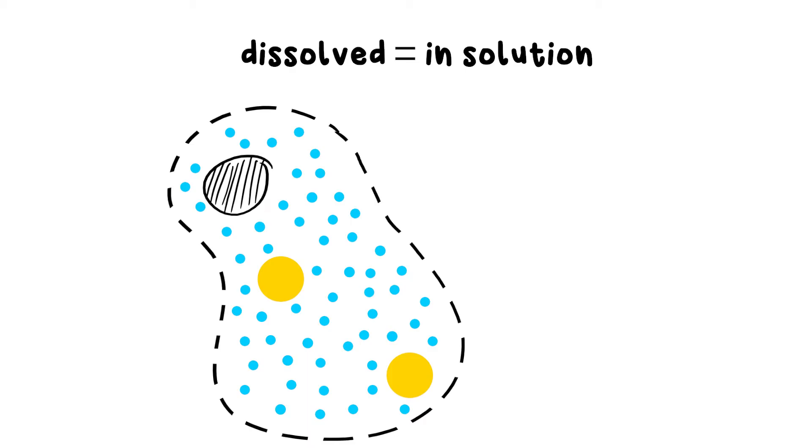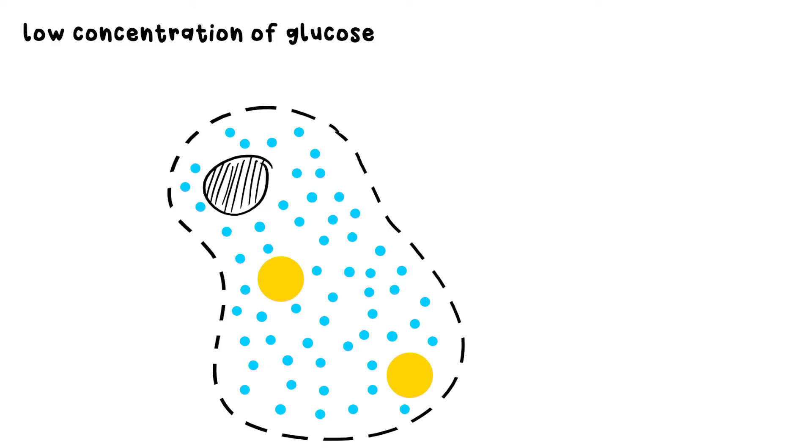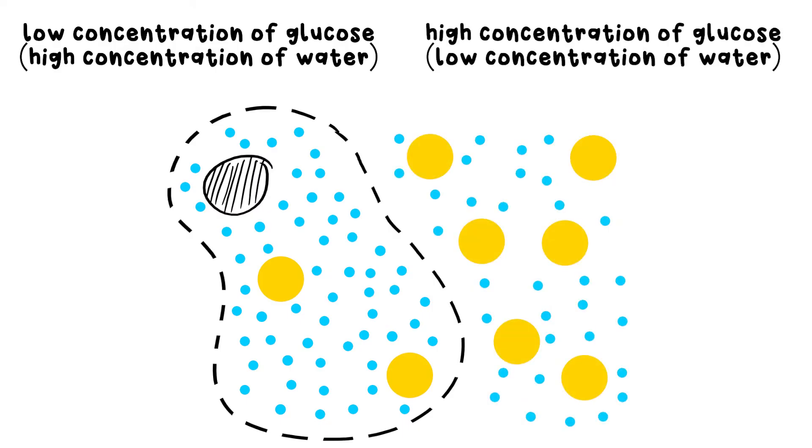If there's not many glucose molecules in solution in one of your cells, we say it's a low concentration. It might be helpful to think of it like this: if you have a low concentration of glucose, that means a high concentration of water. Now, we never use the term concentration of water, but it might help you to understand what happens next. Outside the cell, there might be a higher concentration of glucose, and we can think of that being a low concentration of water, but don't tell anyone.